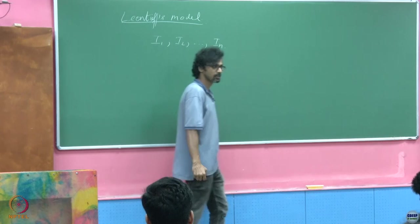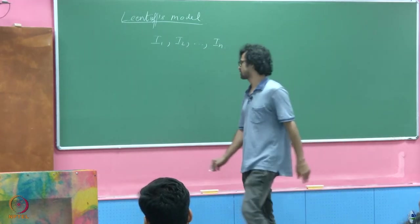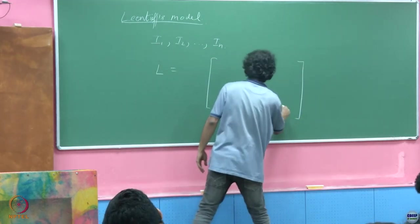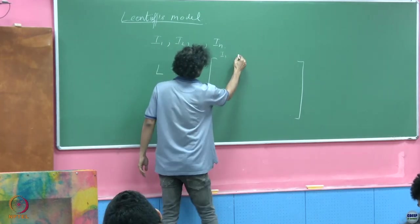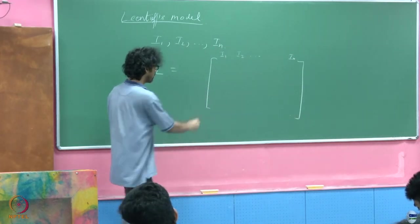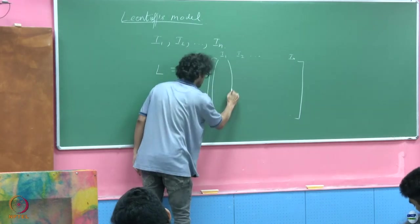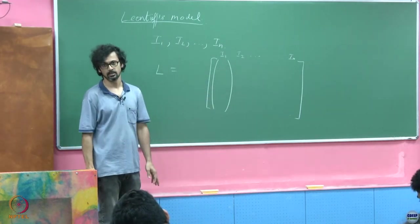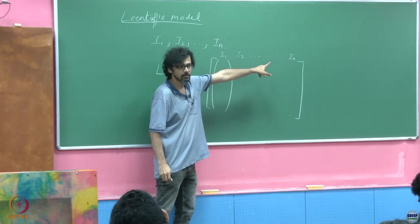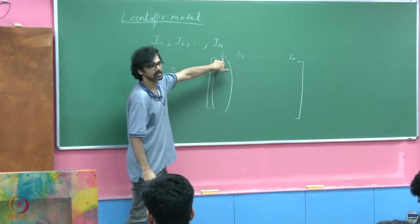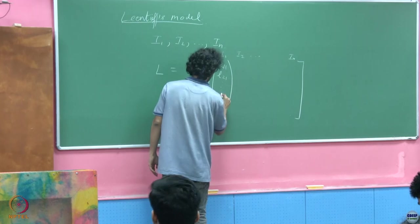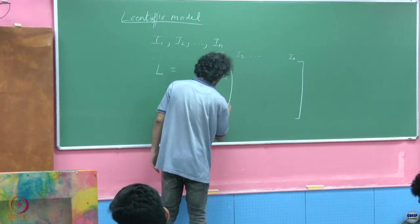Every single unit that industry one manufactures relies on the output of every other industry including its own. This gives rise to a certain matrix of the following form — an n by n matrix. Every column of this matrix tells me exactly how many units of the other industries' product is needed to manufacture one unit of that given industry.